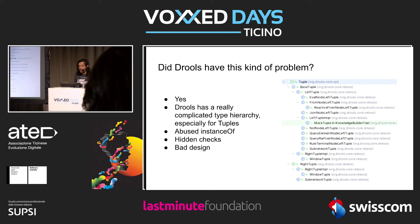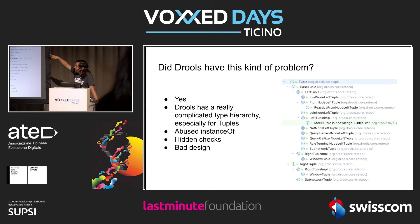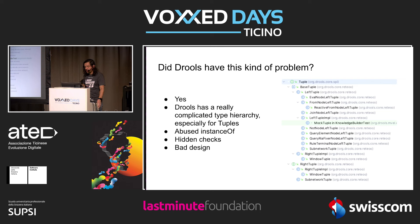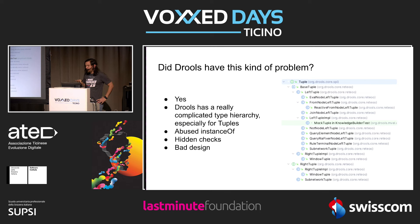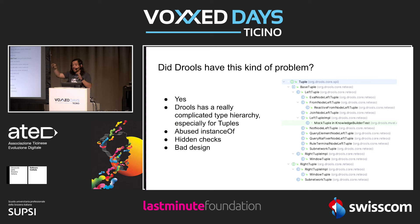Did Drools have this problem? Obviously yes. Drools has a really complicated type hierarchy, and inside the Drools code we abused instanceof — we used it a lot. There were also hidden checks. We already knew it from our benchmark: we confirmed the benchmark wasn't scaling properly across different threads.